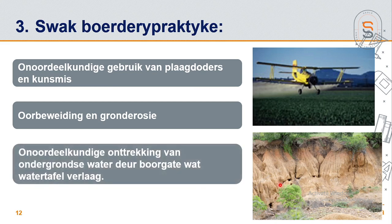Die derde ding by swak boerdery praktyke is onoordeelkundige onttrekking van ondergrondse water deur boorgat. Op 'n stadium toe dit so baie droog was, was dit in die nuus dat hulle soveel nuwe boorgat gaan boor in die Noord-Kaap. Maar die groot belangrike ding is dit is nie net boorgat nie - die water is skaars, so dit moet gereguleer word. Elke persoon kan nie net sy boorgat maak en al die ondergrondse water gebruik nie, want die watertafel verlaag en dan het ons groot probleme.